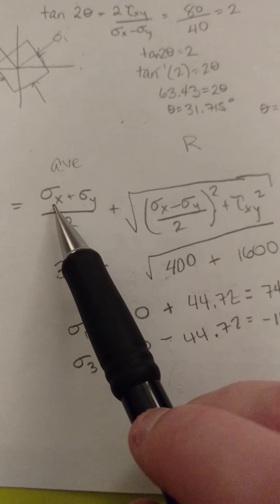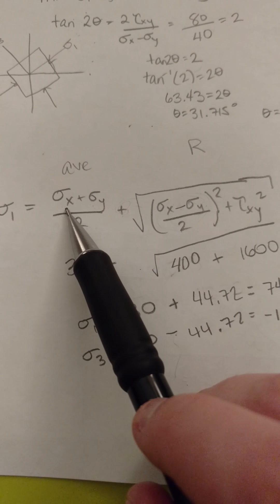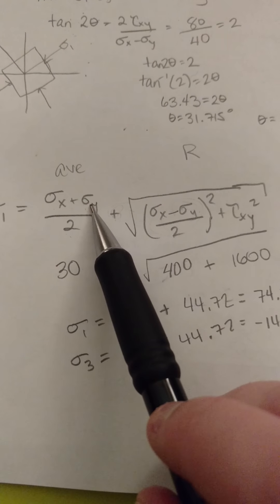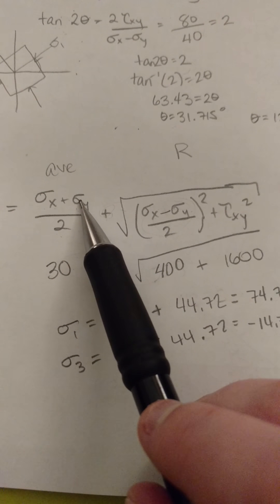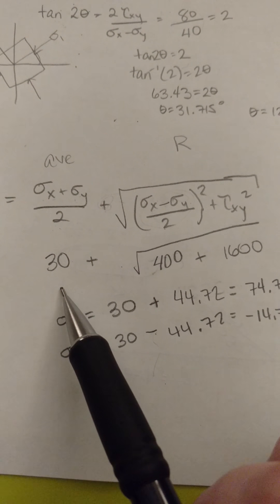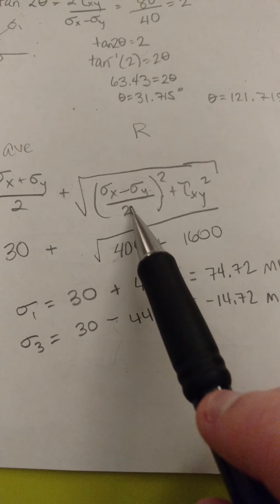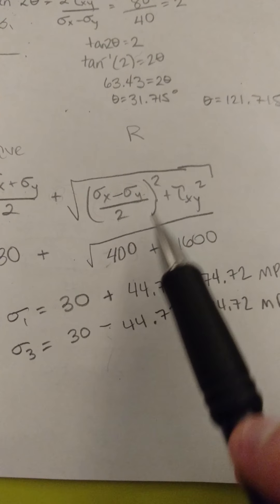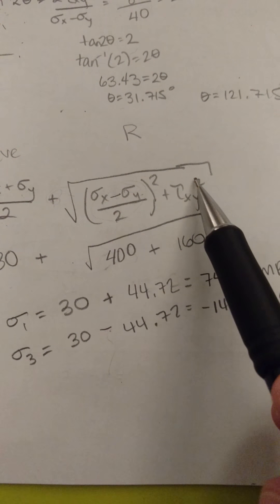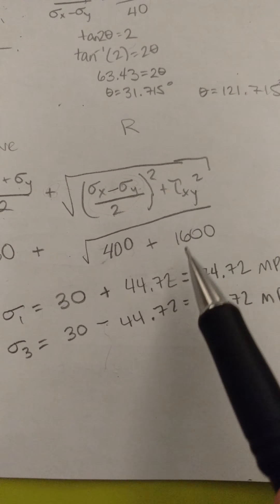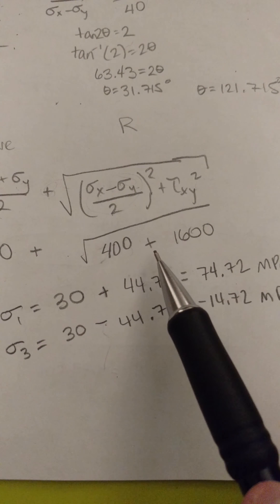So here I did just that. I did sigma x, remember, was 50, sigma y was 10, so 10 and 50 is 60 divided by 2 is 30. Over here I subtracted them, so I got 40 divided by 2 is 20. 20 squared was 400, and tau was 40, so 40 squared is 1600. I took the square root of 2000, which is those two added together, and I got 44.72.